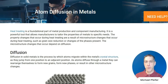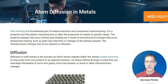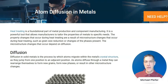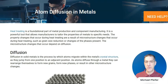Heat treating is an important part of metal fabrication and component fabrication. It's used to cause changes to the microstructure of metals in order to obtain specific properties of a metal. So it's a very powerful process or set of processes that we can use to tailor the properties of metals to meet specific requirements.